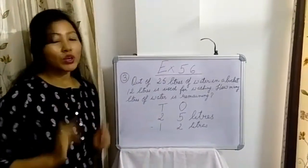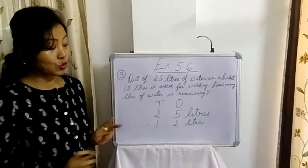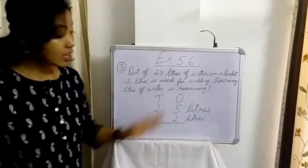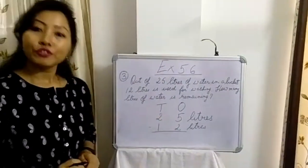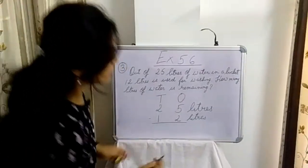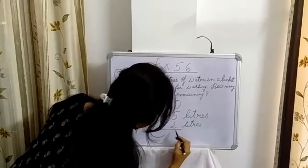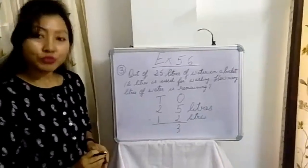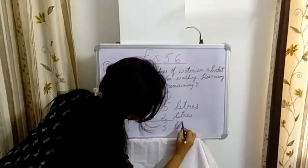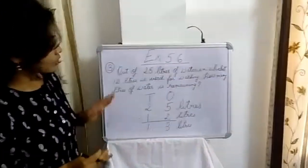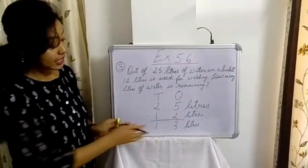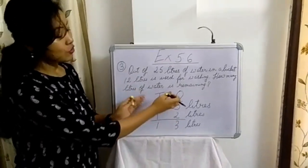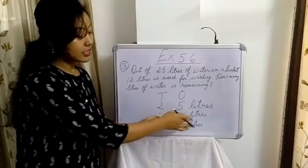Now if we subtract, what is the answer we are going to get? Let us subtract. First we are going to subtract the 1s, that is 2 from 5. And now we are going to subtract 1 from 2. So how many litres of water is remaining now? That is 13 litres. So if we subtract 12 litres from 25, the water that is remaining is 13 litres.